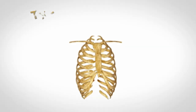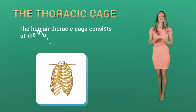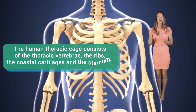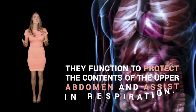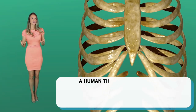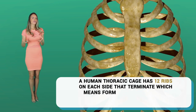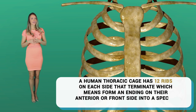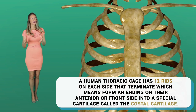The axial skeleton — the thoracic cage. The human thoracic cage consists of the thoracic vertebrae, the ribs, the costal cartilages, and the sternum. They function to protect the contents of the upper abdomen and assist in respiration. A human thoracic cage has 12 ribs on each side that terminate — meaning they form an ending on their anterior, or front, side — into a special cartilage called the costal cartilage.